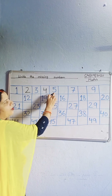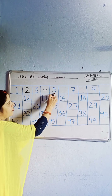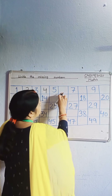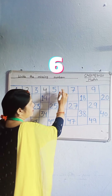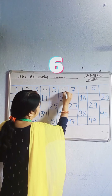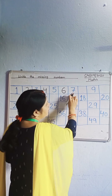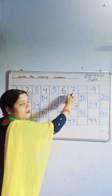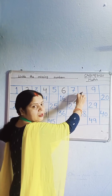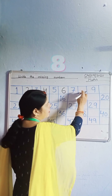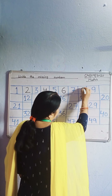Look, which number? 5. Which number is missing? 6. Write down 6. Next, which number? 7. Which number is missing? 8. Write down 8.